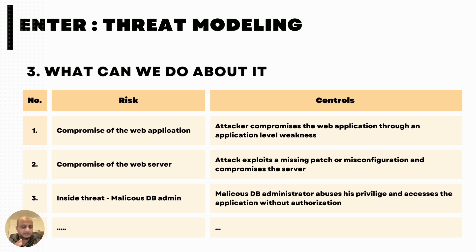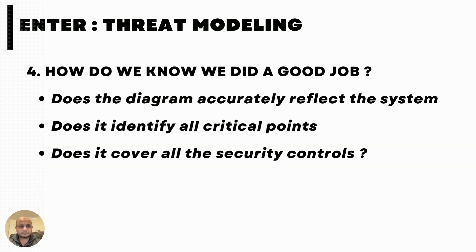So we're going to look at all of them and understand how to fix it. But this is basically what we are trying to do here. This was a very, very high level, thousand-feet view of a basic threat model — we're going to dive deep into this. But this was just to give you an idea of how it works. And most importantly, how do we know we did a good job? There are many ways to validate your threat model — you should always do it. You can ask simple questions: does the diagram accurately reflect the system? Are we identifying all the critical points? Does it cover all the critical controls? Basically you're checking the model, checking what you've looked at for each threat.